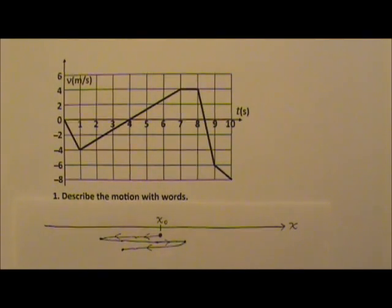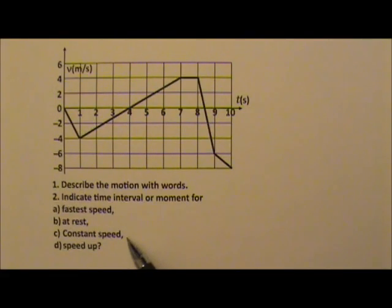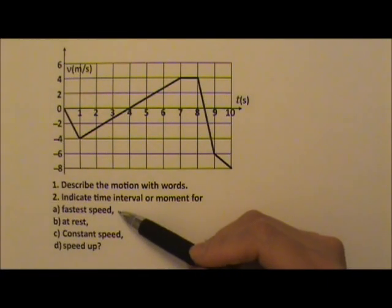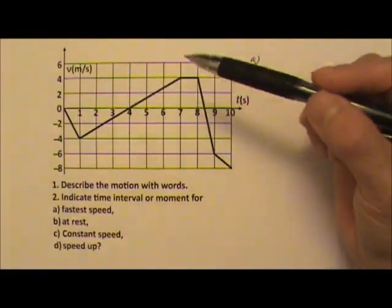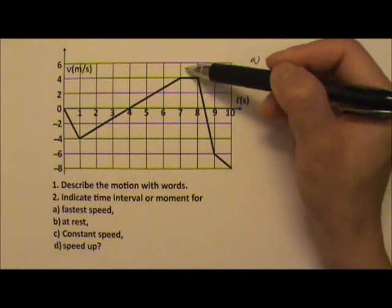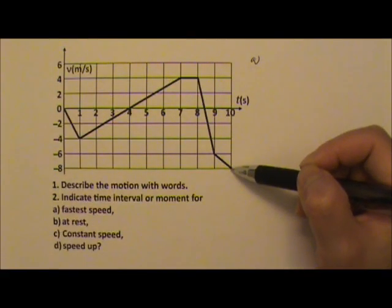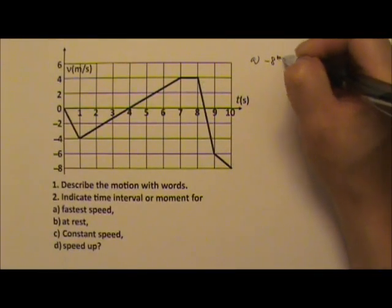Let's see if you can indicate the moment when the object has the fastest speed, when it is at rest, and when it has constant speed. The fastest speed means the largest magnitude of velocity. When the velocity is positive, the largest magnitude is 4 meters per second. When the object has negative velocity, the largest magnitude happens at negative 8 meters per second — that's a larger magnitude. So the fastest speed is at t equals 10 seconds.